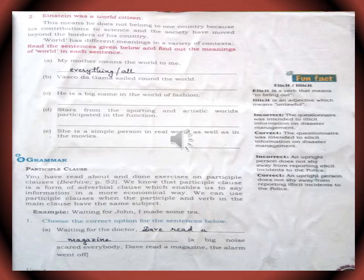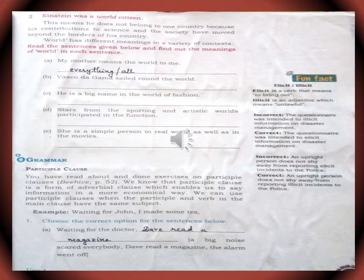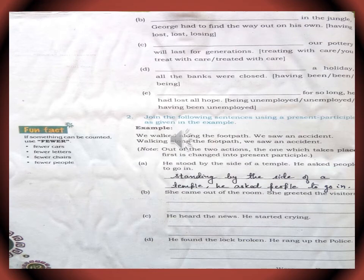We know that a participle clause is a form of adverbial clause which enables us to say information in a more economical way. We can use a participle clause when the participle and verb in the main clause have the same subject. Example: waiting for John, I made some tea. Choose the correct option for the sentences below. For example, waiting for the doctor — some sentences are given in brackets: a big noise scared everybody, Dave read a magazine, the alarm went off. The appropriate answer is: waiting for the doctor, Dave read a magazine. In the same way, dear students, try to find the words given from the brackets and complete the sentences.